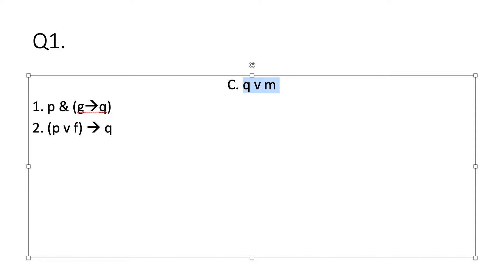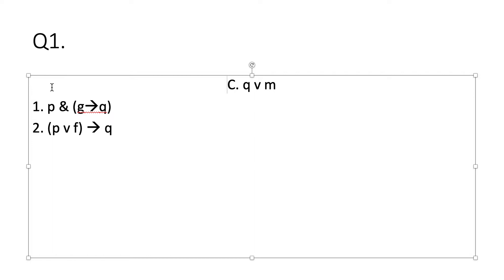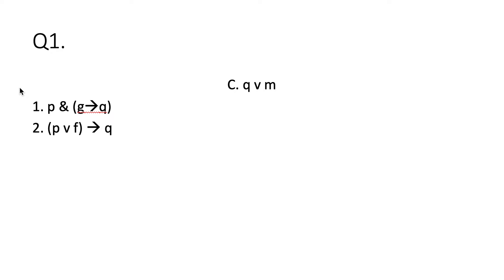I notice first of all that one of the disjuncts in my conclusion doesn't even make an appearance in my premises — there is no M in my premises. That alerts me to the fact that what I'm really going to have to do is actually just show that Q follows necessarily from the truth of these premises, and then use the rule of addition to add Q or M. If I know that Q is true, I know necessarily that Q or M is true — that's what the rule of addition says, because for a disjunction to be true only one of the disjuncts needs to be true.